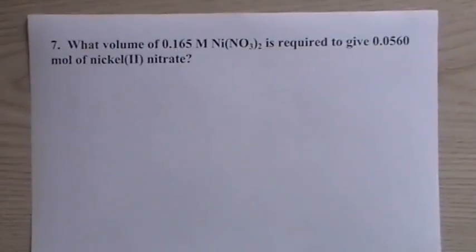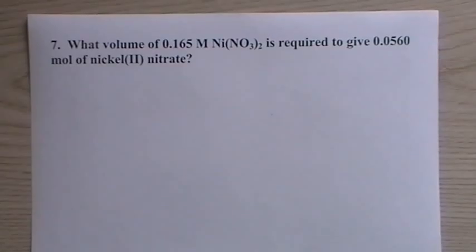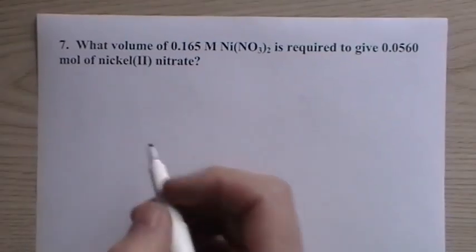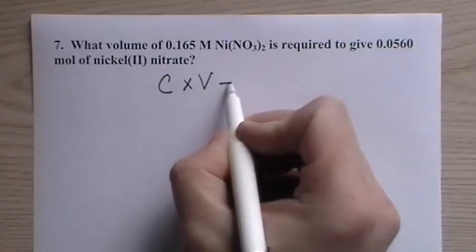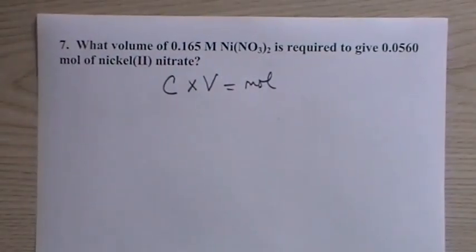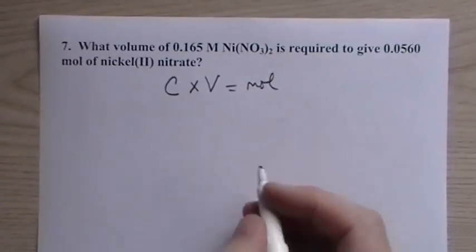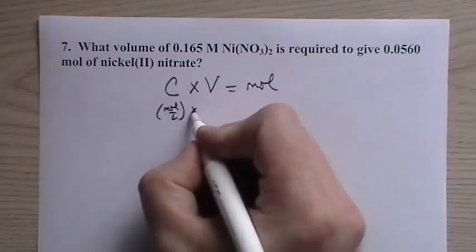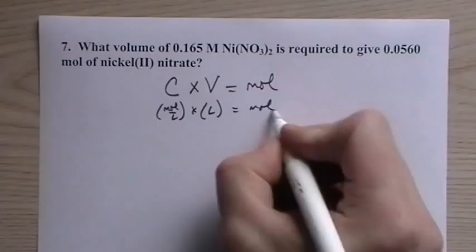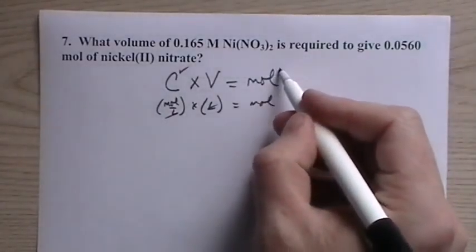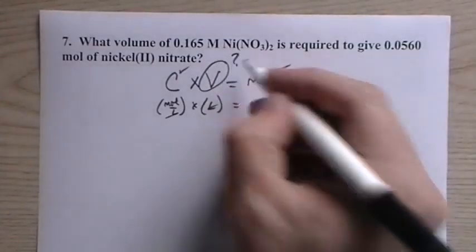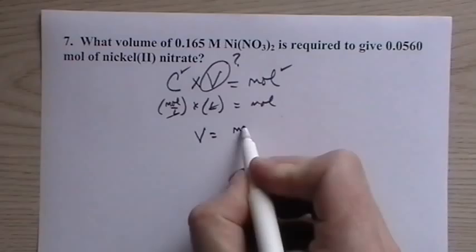It's going along pretty well, actually. What volume of 0.165 molar nickel(II) nitrate is required to give 0.0560 moles of nickel(II) nitrate? So if we take the concentration times the volume, we end up with moles. This is the equation we're going to have to use. We were using it earlier, but it's fairly straightforward. Here we have to kind of stop and think about it. The concentration is moles per liter, the volume in liters, and you can see that will definitely give us moles. So we know the concentration. They gave us this. They want to know how many moles, and they gave us the moles. What we are missing is the volume. This is the thing that's in question. So then the volume is going to be moles divided by concentration.